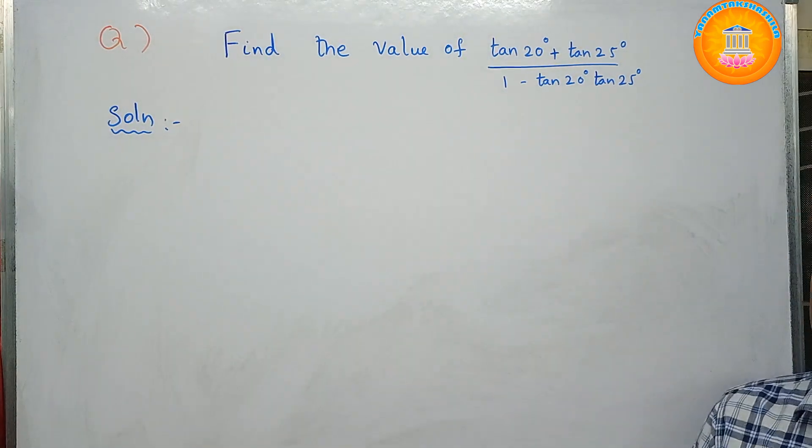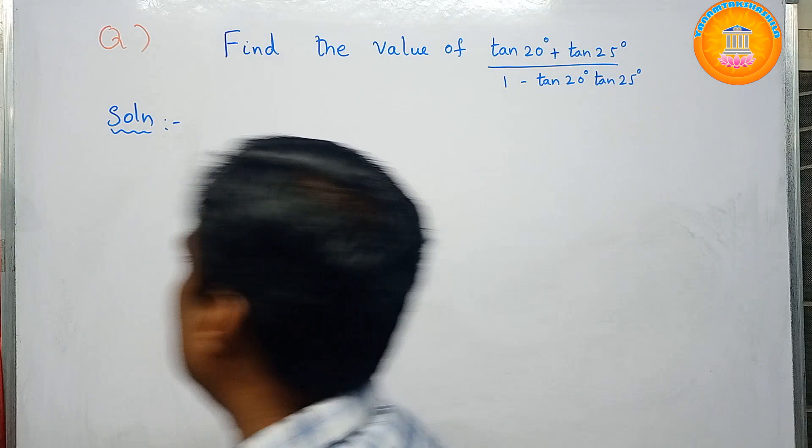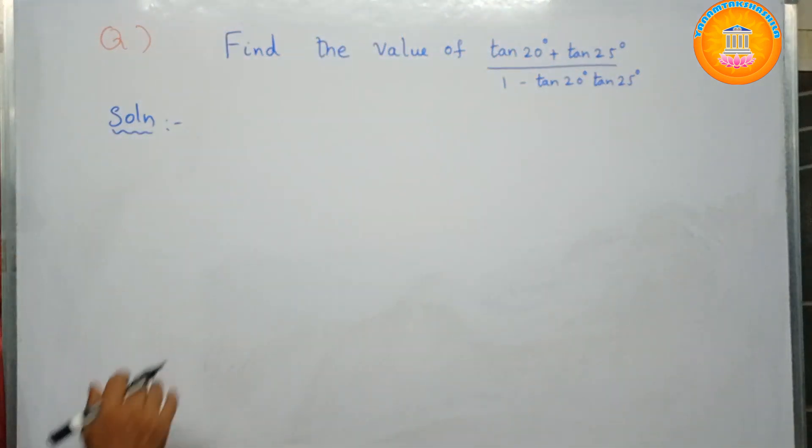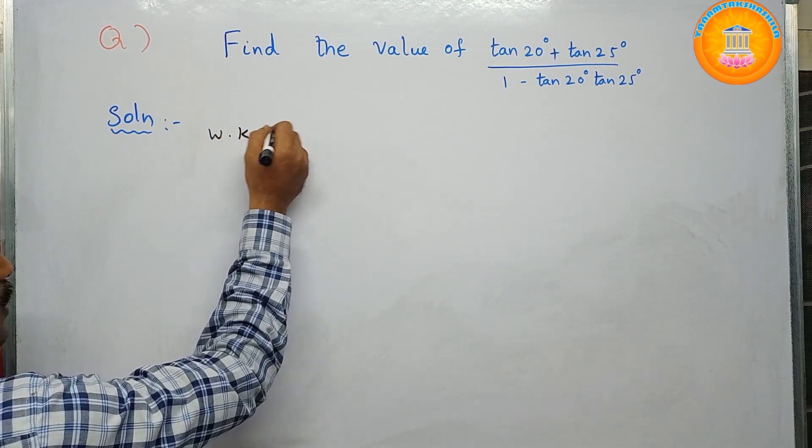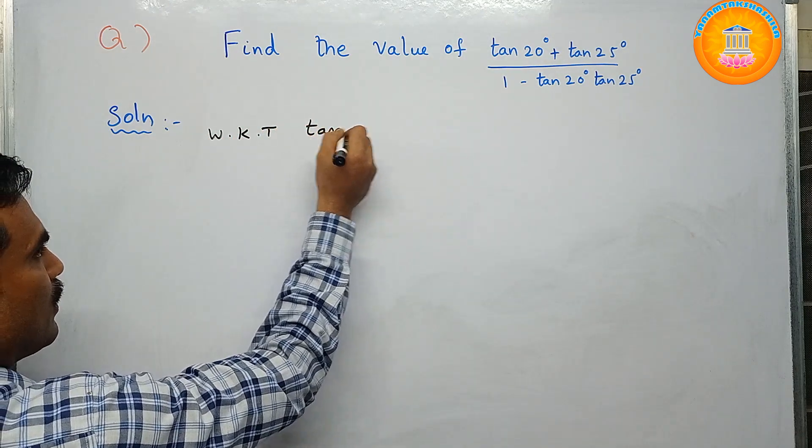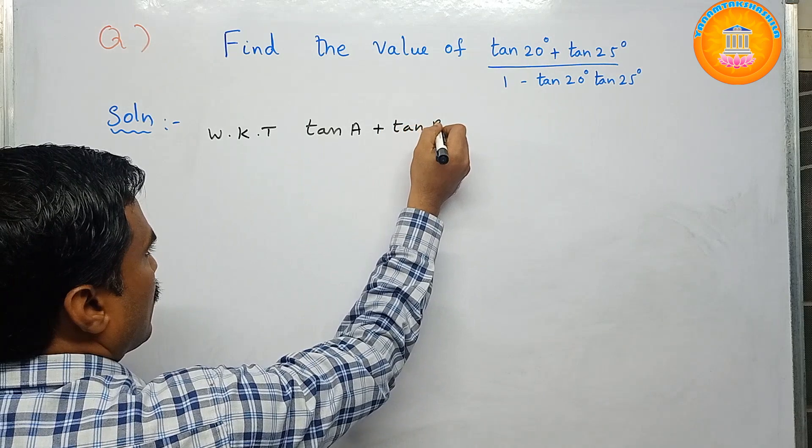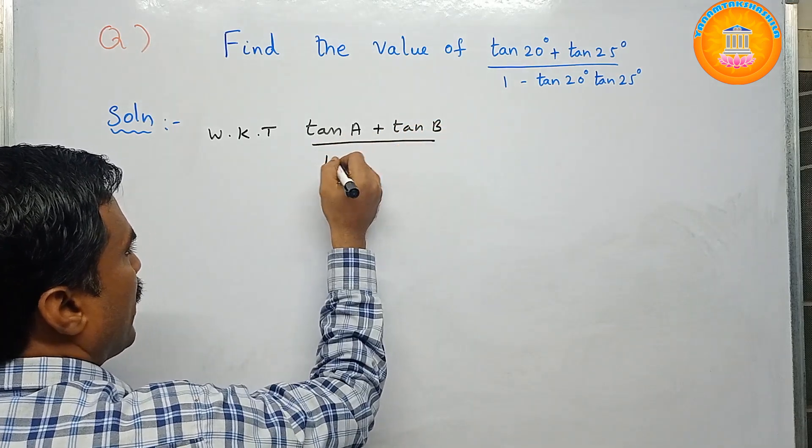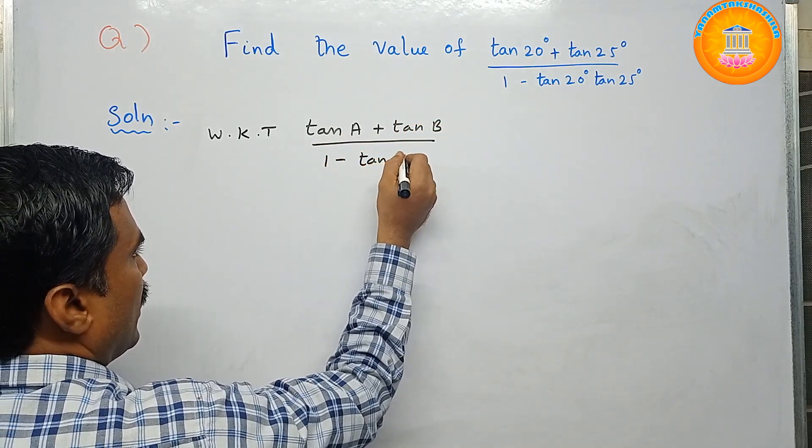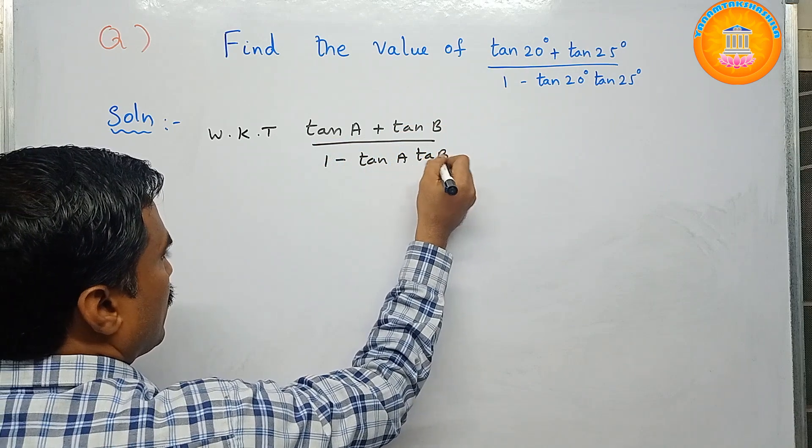First, before that, we write the formula of tan of A plus B. So we know that tan A plus tan B divided by 1 minus tan A tan B equals tan of A plus B.